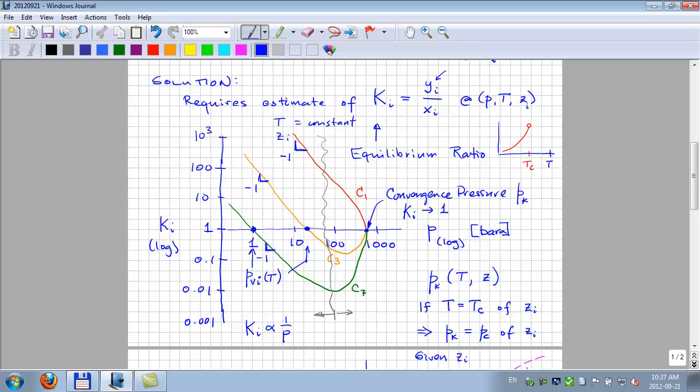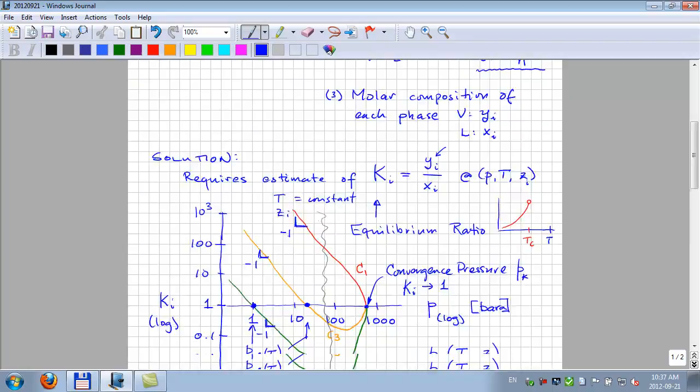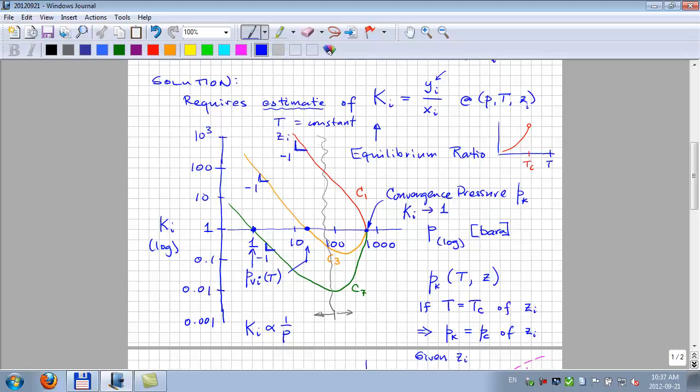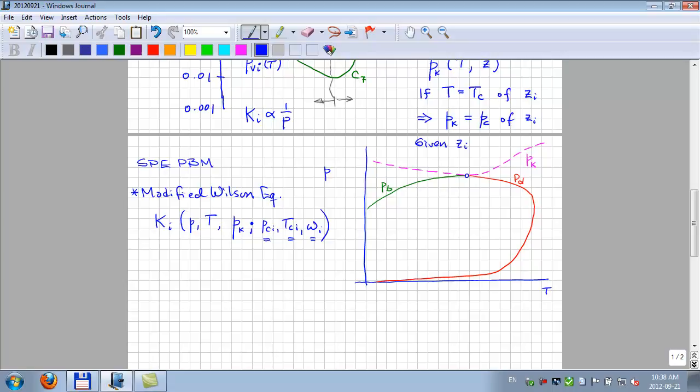So these are the K values. This is a good source of coming up with estimates of the K values. What I said is that to solve this general problem, we need an estimate, not the exact value, but an estimate of Ki, and we get it from this equation or charts or something. We know the overall composition, the pressure and temperature. With those, we can make some estimate of the K values. With those, what we want to do is find out, is it one or two phases, and if it's two phases, how much of each phase, and what are the yi and xi of the two phases?